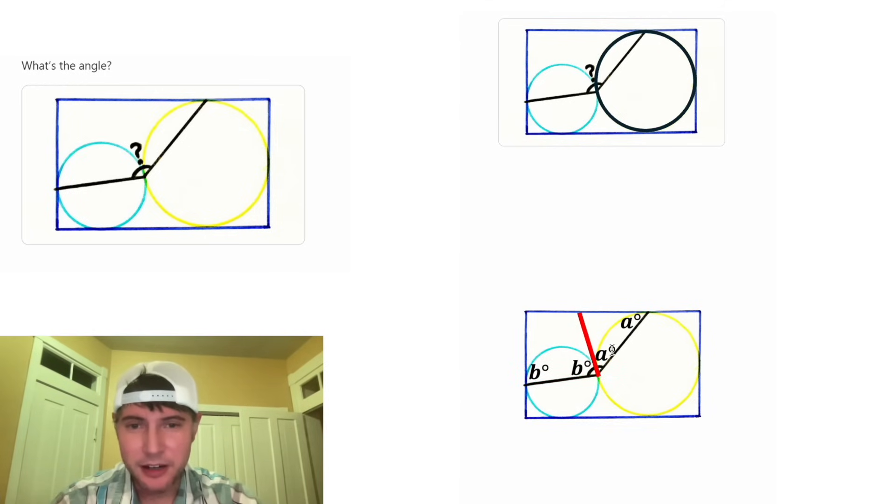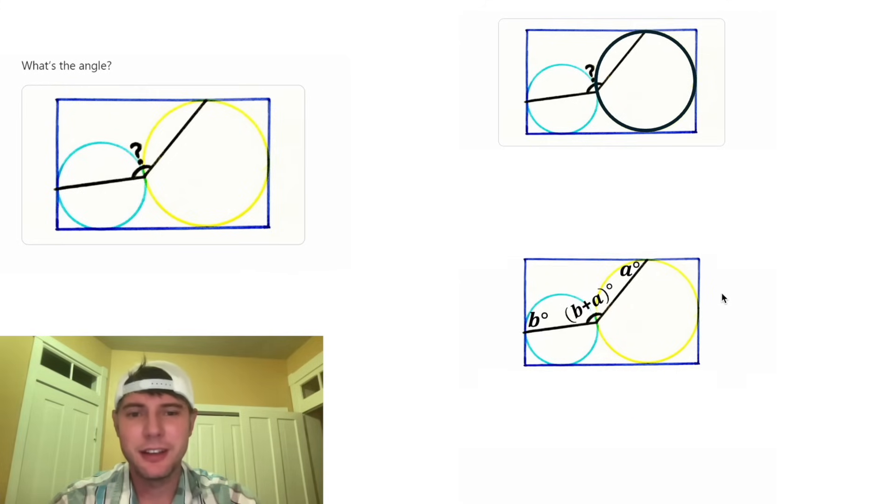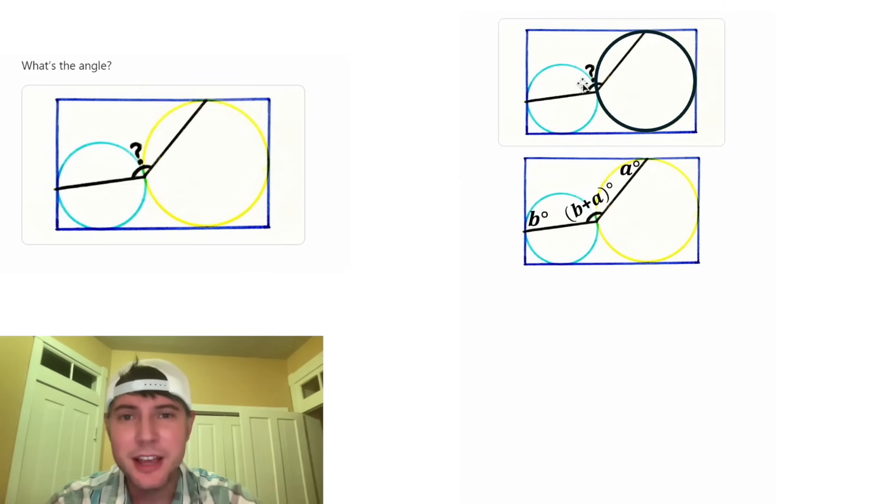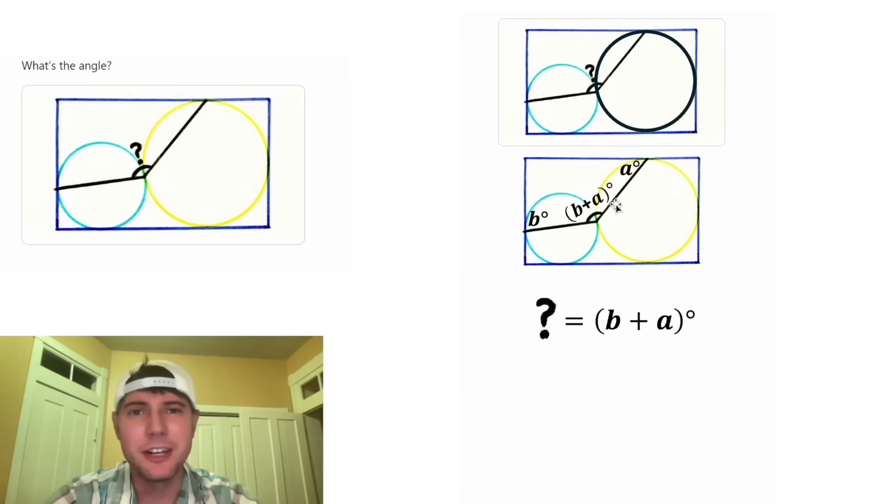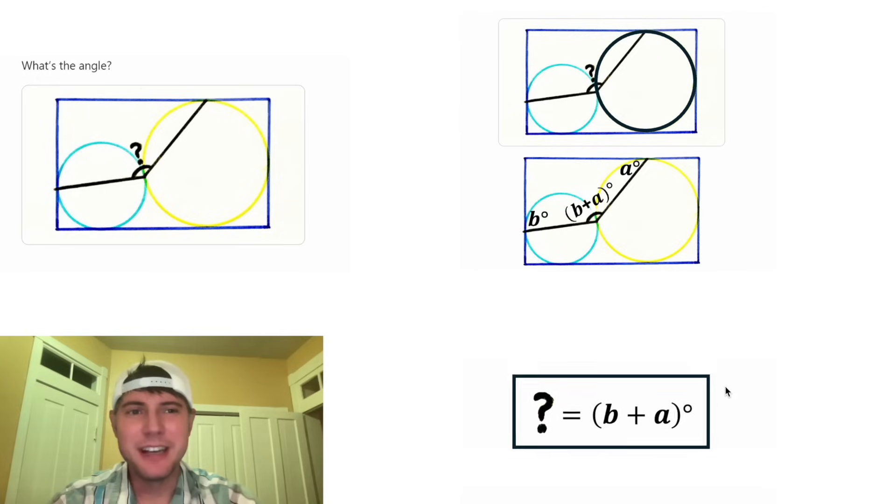And then this angle right here is made up of B and A. We can make it a single angle of B plus A degrees. And this B plus A degrees, that is our question mark. So we can say question mark equals B plus A degrees. This looks important. Let's put a box around it and move it down here.